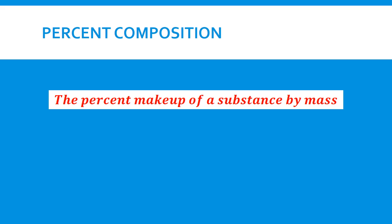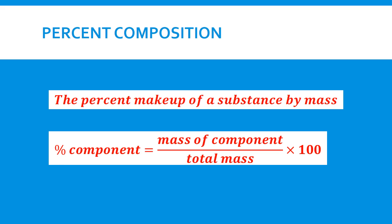When we talk about percent composition, we talk about the percent makeup of a substance by mass. We take the mass of the component divided by the total mass, multiplied by 100, and that gives us our percent composition for that particular component.